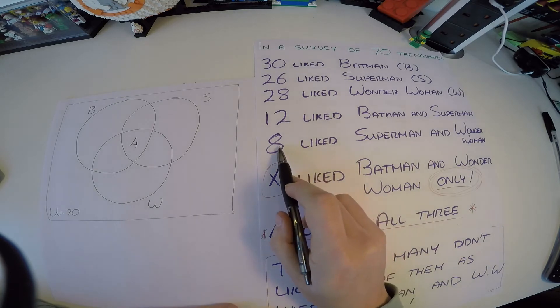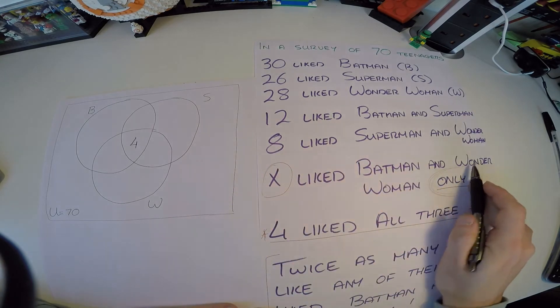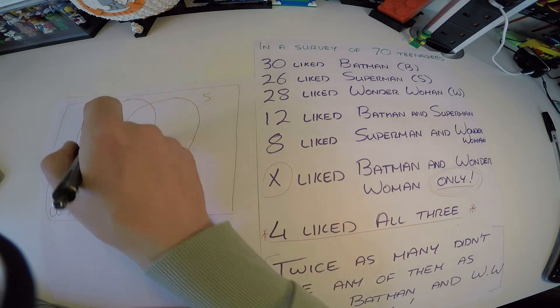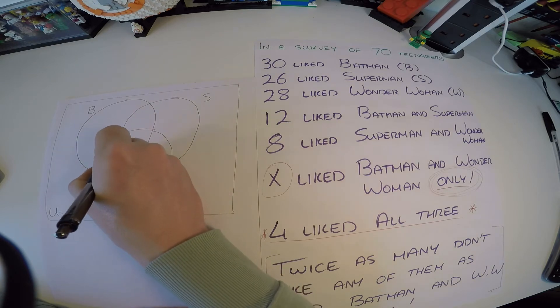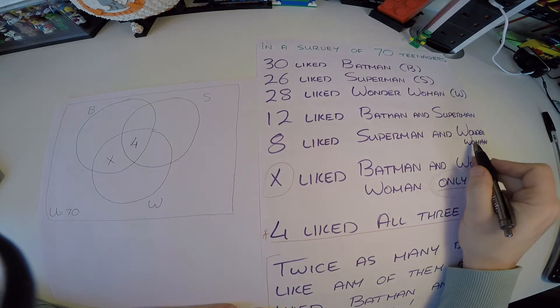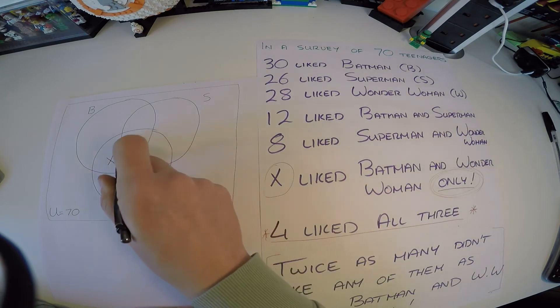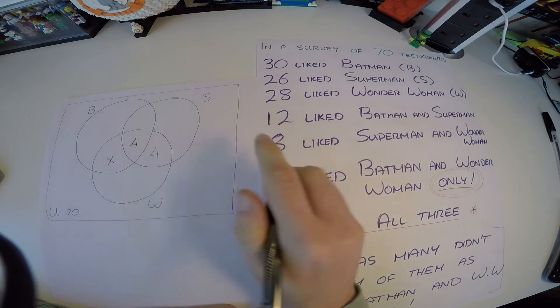Now let's work backwards and say, okay, let's forget about this x for a minute. Well, we don't have to, x like Batman and Wonder Woman only, so let's go to the Batman Wonder Woman only. It's this section here, doesn't involve all three, the x goes in here. 8 like Superman and Wonder Woman, it doesn't say only, so that means that Superman and Wonder Woman is in total 8. Now we know the 4 that make up all three is already part of this, so this is also 4, so 4 and 4 make up this 8 that we're looking for here.